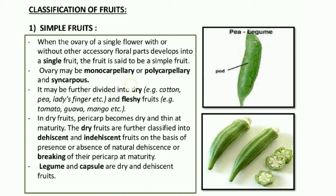As the name indicates, dry fruits are dry — for example, cotton, pea, beans, etc. Fleshy fruits, for example, tomato, guava, mango. Simply, if they do not retain any water content, they are dry fruits. If they retain juicy watery content, they are fleshy fruits.